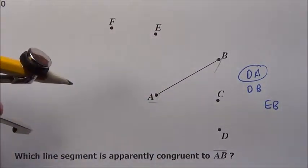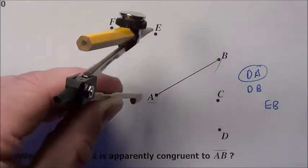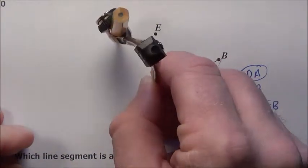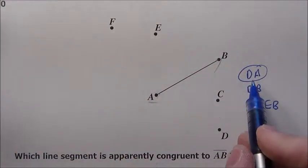So that option's out. And then I had A to F was another option. Well, A to F we already said was too short. So it's going to be option F, line segment AD.